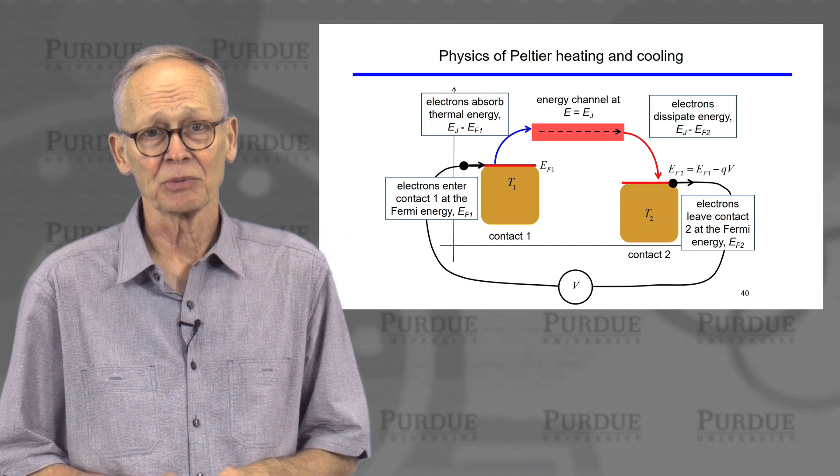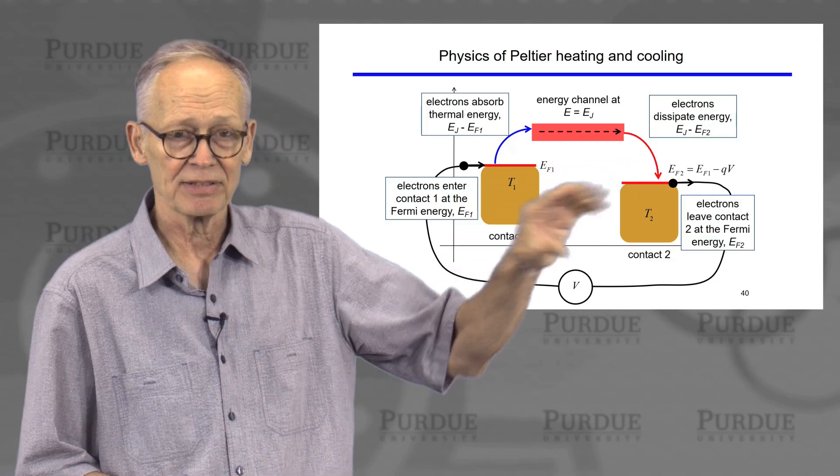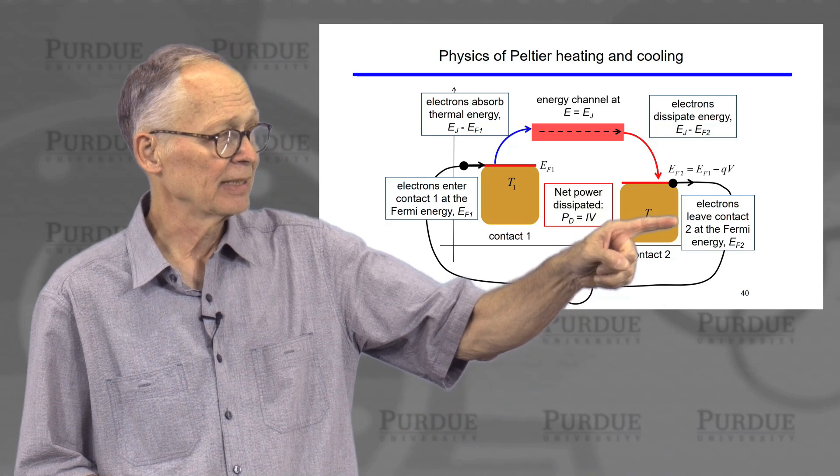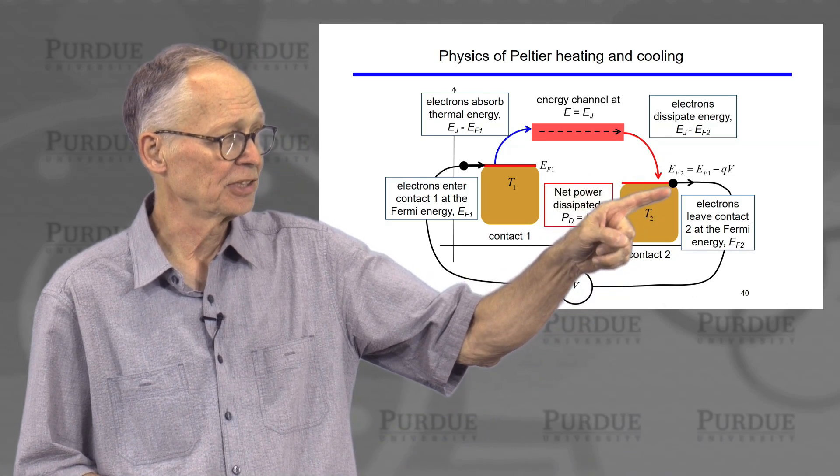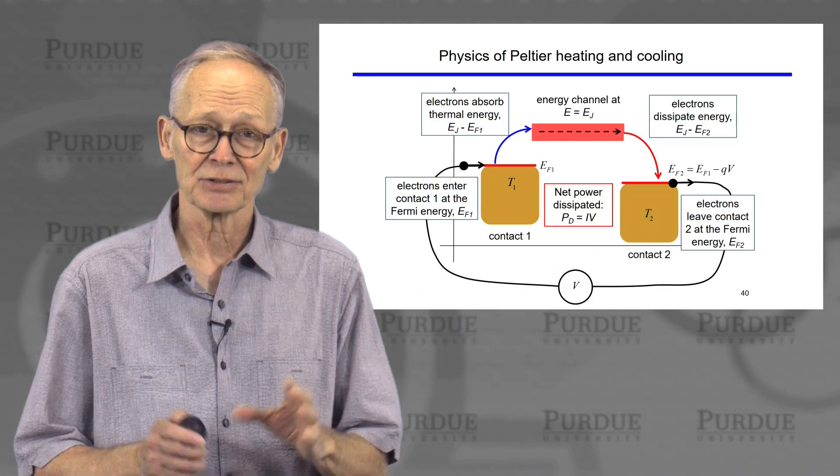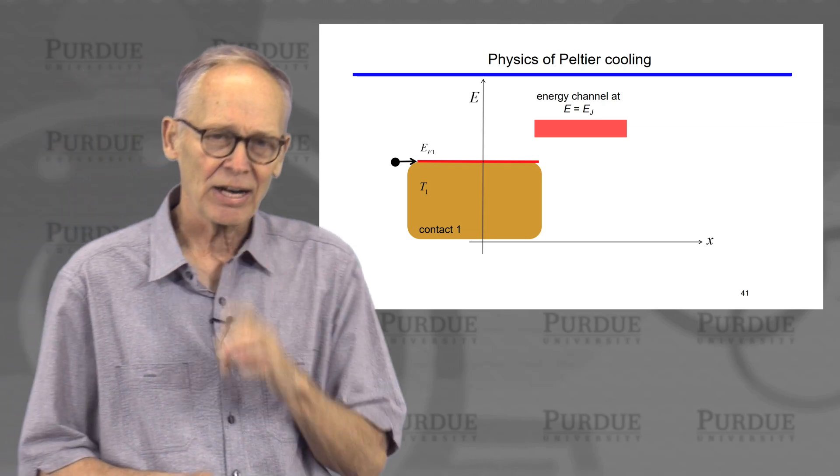So as this electron goes round and round, we pump heat from the cold side, and we dump it in the hot side. And you can easily show, because there's a little extra energy dissipated here because the Fermi level is lower, that the power dissipated is current times voltage, just as we would have expected.